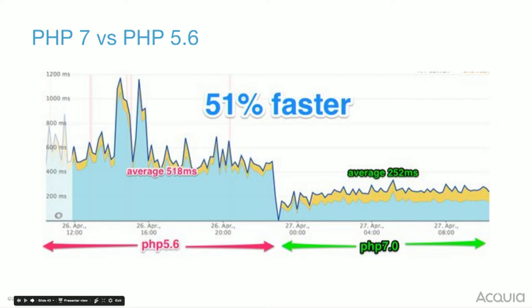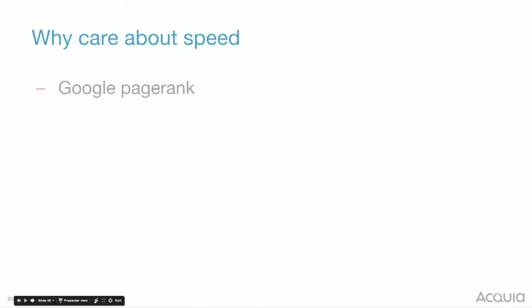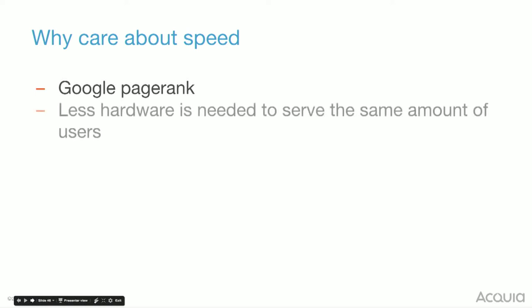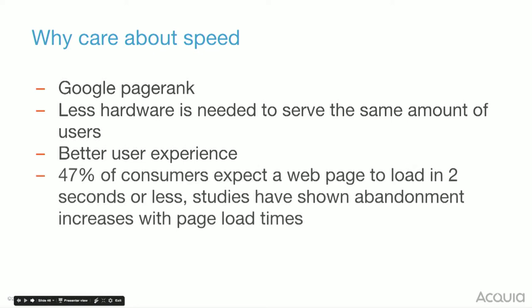If you use New Relic, this is what your graph could look like — it's a very happy graph. Why care about speed? It's just hardware, right? Just throw more at it. Well, PageRank is one reason. You can save money — that's always nice. Then you can build new features. People like faster pages. About half the people expect a web page to load in two seconds or less. And Amazon proved that if they slowed down a page by 100 milliseconds, 1% of sales dropped off — so if you're doing it by a second, that's 10% or more.